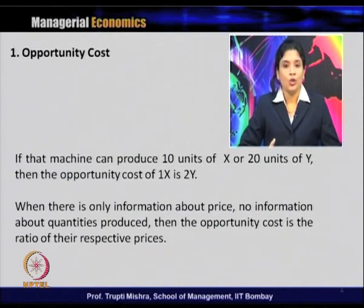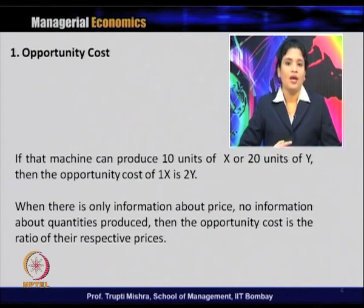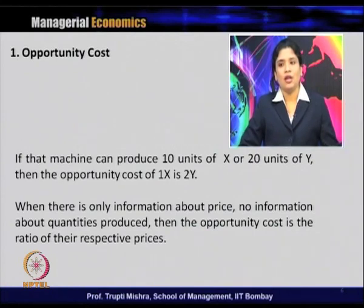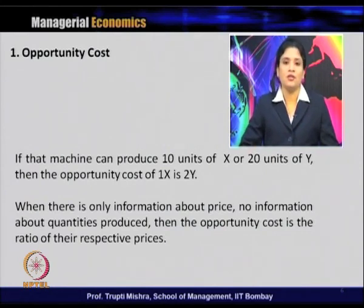When there is no information about the price or quantity produced, then the opportunity cost is the ratio of their respective prices. When there is a lack of information about price or quantity, the opportunity cost is evaluated in terms of the prices associated with the products — this is the ratio of their respective prices.